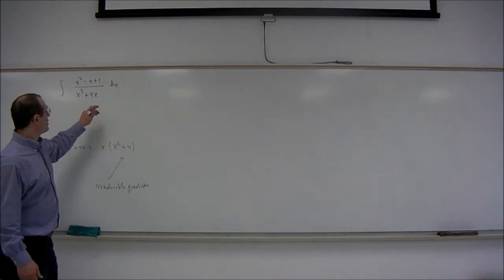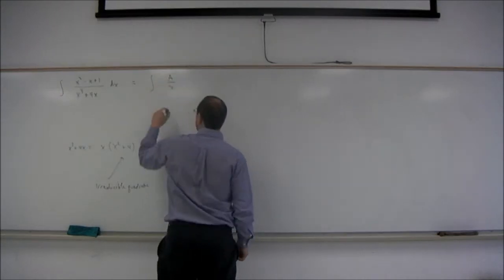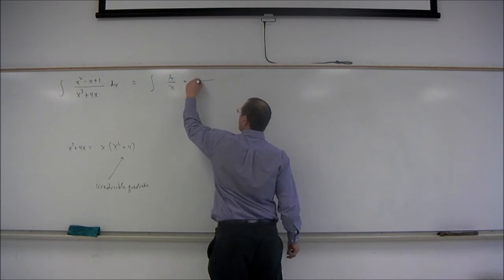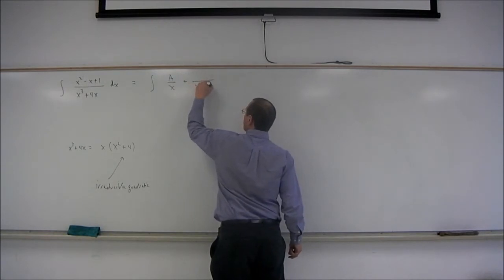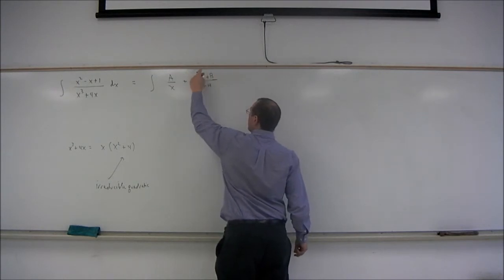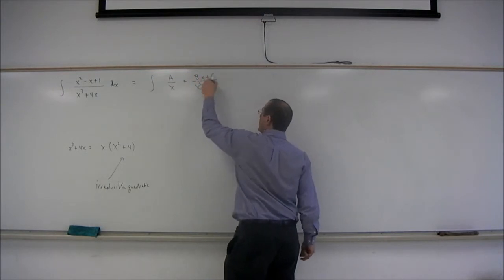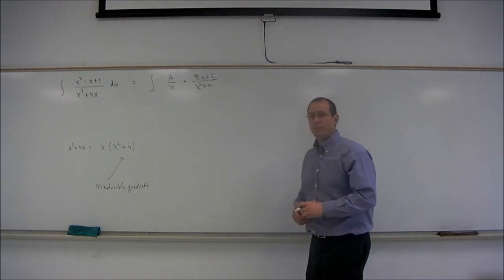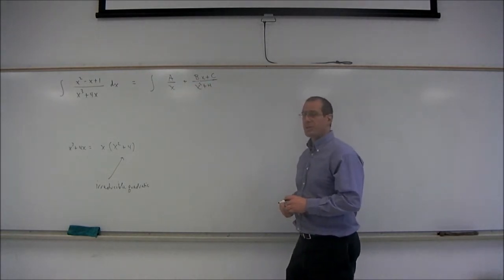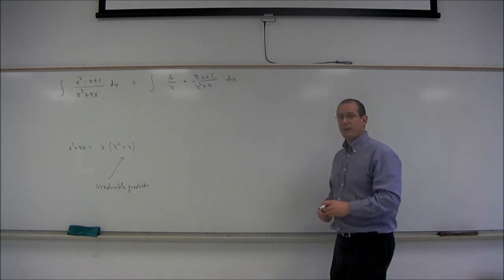The partial fraction decomposition in this case will look like we have A over x for the linear factor. And then for the irreducible quadratic factor, the numerator will be a linear function, Bx plus C. So the form is A over x plus Bx plus C over x squared plus 4.